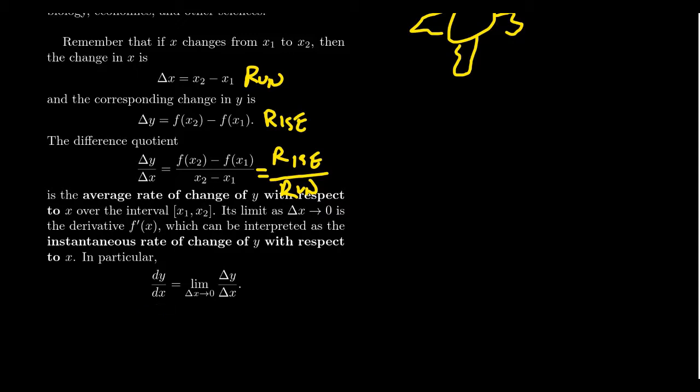For example, we have talked a lot in this lecture series about a very specific example from physics. In physics, we have already studied the so-called velocity problem. So if S equals F of T, this is the motion function, the motion function of some particle or object, so it's moving.